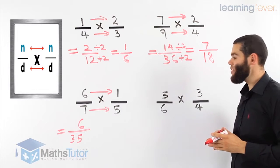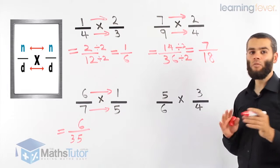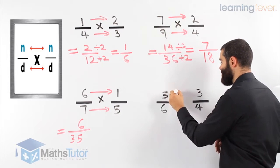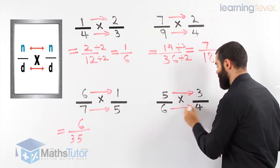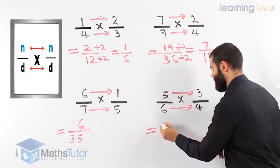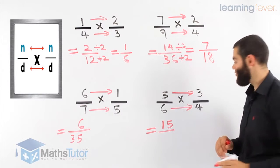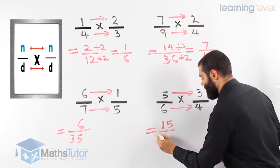Last example, five over six times three quarters. Again, with multiplication, top times top and bottom times bottom. It's that simple. Five times three is 15. Six times four is 24.